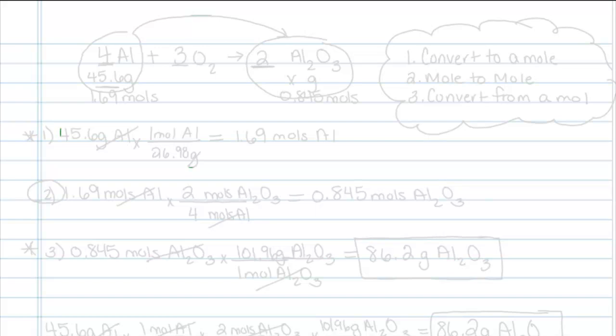In this example problem, we are given a balanced equation. 4 moles of aluminum and 3 moles of oxygen is going to yield 2 moles of aluminum oxide. Remember that stoichiometry is really comparing the amount of one substance in reaction to the amount of another. And they are related in the equation by their coefficients which tells us the mole to mole relationship.